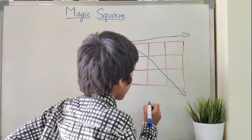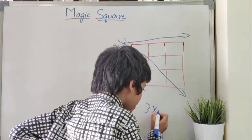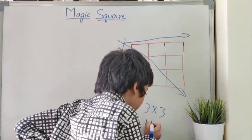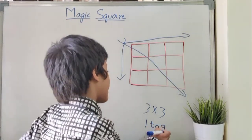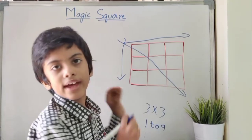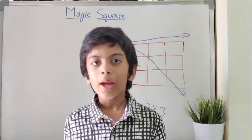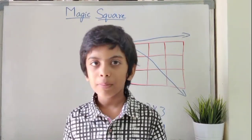If you consider a 3 by 3 square and 1 to 9 numbers, to arrange the numbers in this square. To get more interesting, please pause the video and try this puzzle.